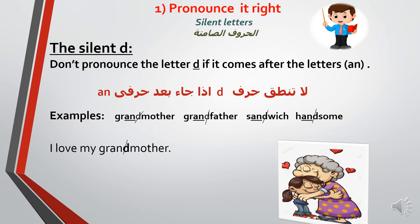Rule: don't pronounce the letter D if it comes after the letters A-N. My examples: 'grandmother' — الجدة — 'grandfather' — الجد — and 'sandwich.' Notice I don't say 'sand-wich'; I say 'sandwich' — the D is silent because it comes after AN.